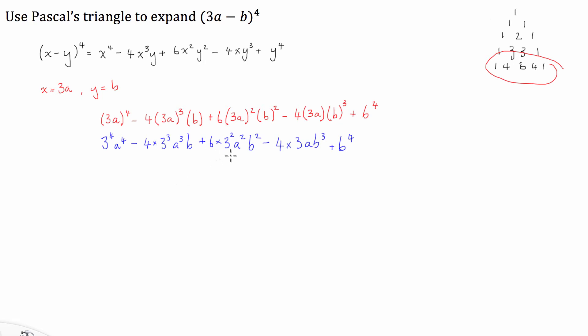Now, now we've got to here the rest of it is quite literally just simple arithmetic. 3 to the power of 4 is 81a to the power of 4. 3 to the power of 3 is 27, 27 times 4 is 108a to the power of 3b.